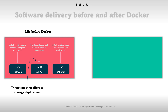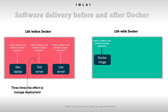Now let's jump into life with Docker. Initially we instantiate one server — we'll call it the Docker server. Whatever application we want to deploy, its source code and all the instructions for deployment are placed in a Dockerfile. Once you write all the instructions in your Dockerfile, your Docker image will be ready. The Docker image contains all the instructions for deploying the application.